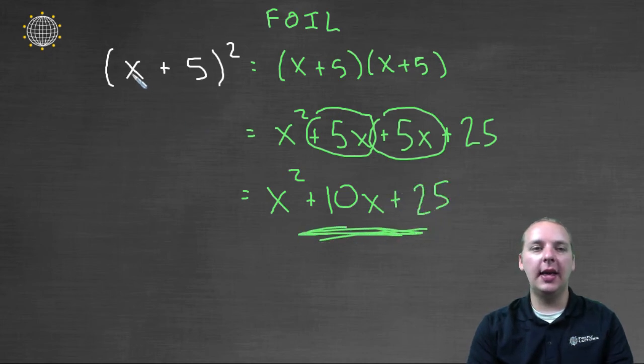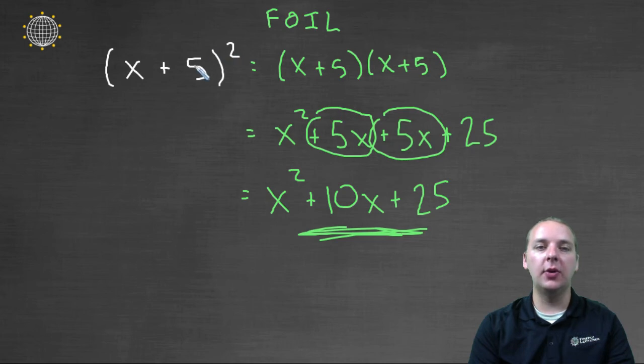So this is what we get when we take x plus five quantity squared. And notice, if we had just squared the x and squared the five, we would have just got x squared plus twenty-five, which obviously would have been the incorrect answer.